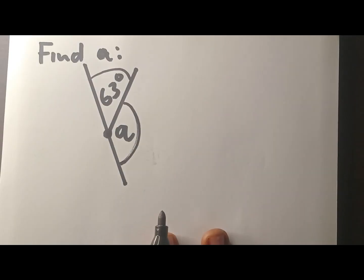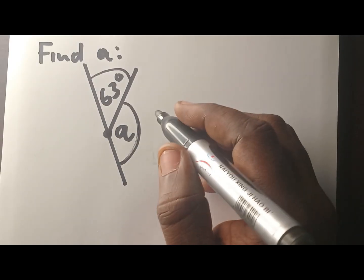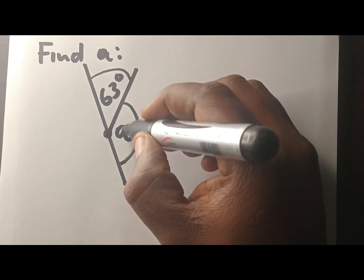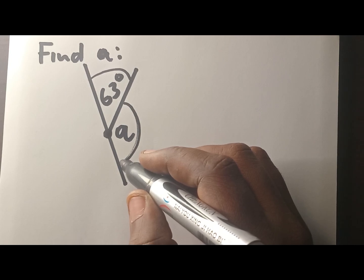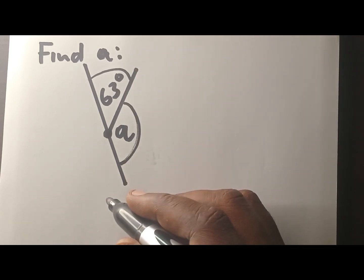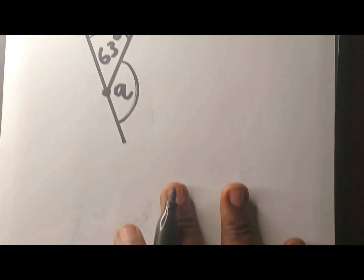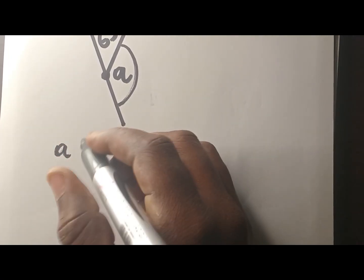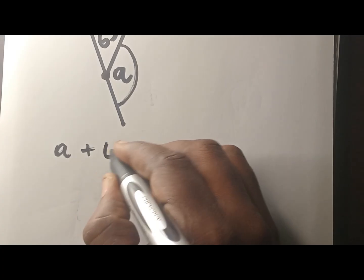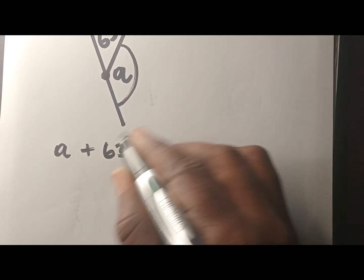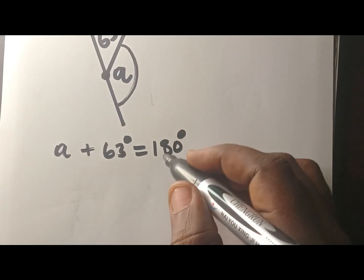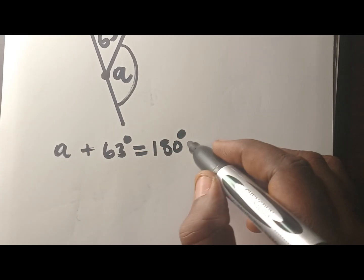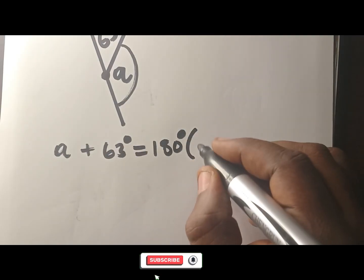So what is the relationship between angles on a straight line? They add up to 180. So what you do is say this plus this equals 180, and then you tell the marker why. The reason is that these are angles on a straight line. So we have A plus 63, and because they're on a straight line, they will add up to 180.